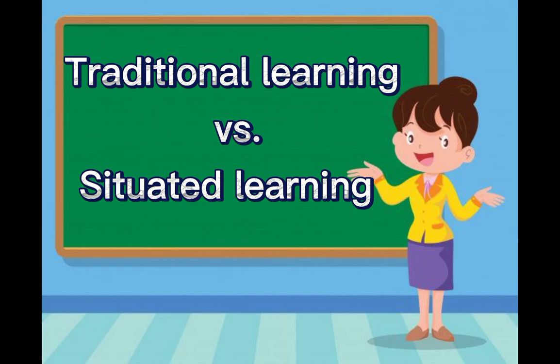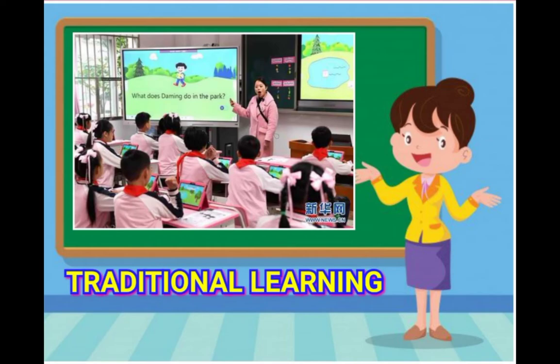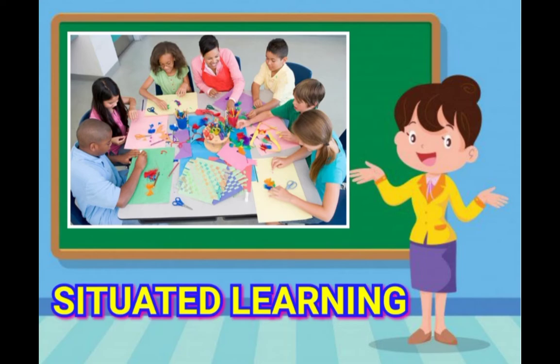Traditional learning versus situated learning. In a traditional classroom, students are taught ideas and concepts and asked to apply them later, drawing from abstract, out-of-context experiences such as books and lectures. But in a situated learning classroom, students can learn ideas and concepts by doing activities.